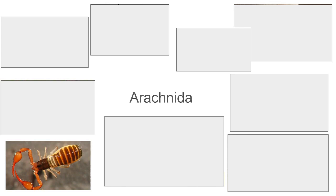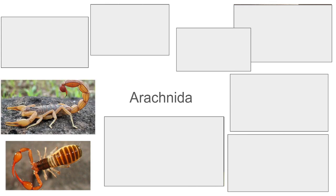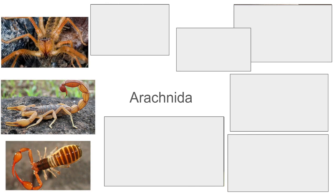We can start with the pseudoscorpion, an arachnid that most people aren't familiar with, but they actually exist all over the place. They have many different species — they're just like scorpions, but they don't have tails and they're really small. They live in the soil and hunt other small animals there. Here we have the true scorpions, which can grow much, much bigger than pseudoscorpions and have that famous venomous tail. Both of these creatures have claws for pedipalps.